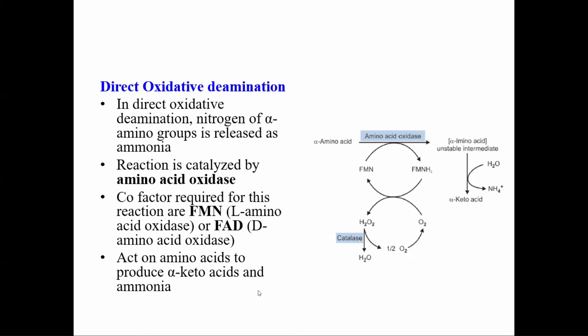Apart from the releasing of free ammonia by glutamate dehydrogenase deamination, there are other types of oxidative deamination. Two major enzymes involved are L-amino acid oxidase and D-amino acid oxidase. L-amino acid oxidase is responsible for oxidative deamination of L-amino acids, and D-amino acid oxidase is responsible for releasing ammonia from D-amino acids, which are generally present in the cell walls of bacteria. L-amino acid oxidase uses FMN as a cofactor and D-amino acid oxidase uses FAD as the cofactor.